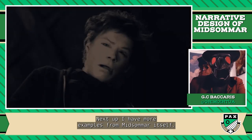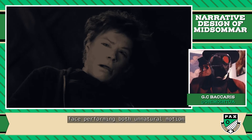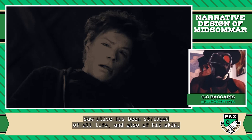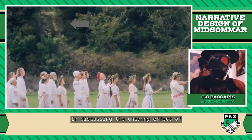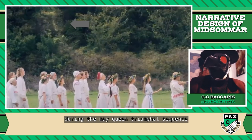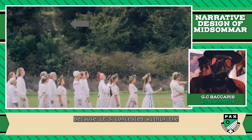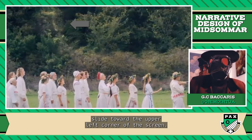In Midsommar, a member of the Harga community is wearing the character Mark's disembodied face over his own. Seeing Mark's lifeless face performing both unnatural motion and unnatural stillness stretched over the contours of another man's skull is effectively unsettling. We don't see Mark's death on screen, but this sudden confirmation that a character we previously saw alive has been stripped of all life and also of his skin dips sharply into the uncanny. The appearance of Dani's deceased sister during the May Queen triumphal sequence is subtler, but equally if not more unsettling because it's concealed within the scenery, forcing the discerning eye to pick it out.